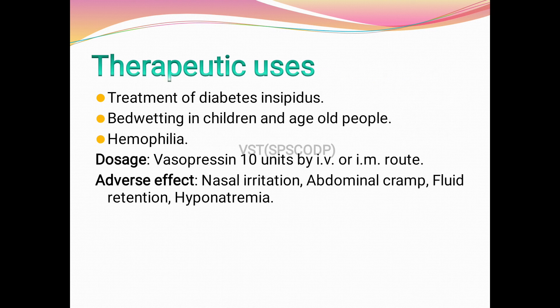Therapeutic uses: treatment of diabetes insipidus — in which salt and water are abnormally excreted from the body; bed-wetting in children and elderly people; hemophilia. Dosage: vasopressin 10 units by intravenous or intramuscular route. Adverse effects: nasal irritation, abdominal cramp, fluid retention, and hyponatremia — decreased sodium levels. In the next lecture we will discuss the chapter on hormones and hormone antagonists. Thank you.